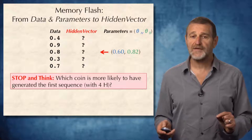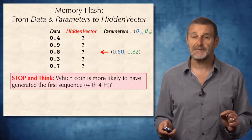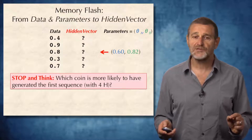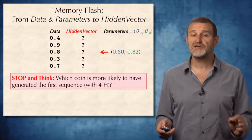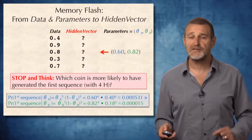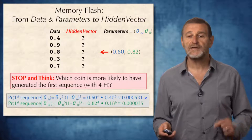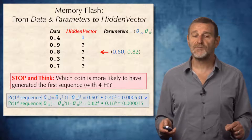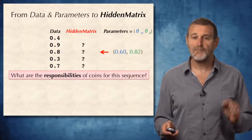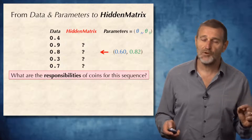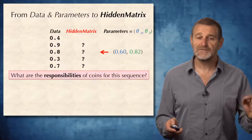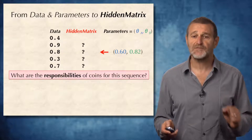Let's recall how we derive the hidden vector from the previous lecture. Let's assume the parameters are 0.60 for the blue coin and 0.82 for the green coin. Which coin is more likely to have generated the first sequence with these four flips? We simply computed the probability of the sequence being generated by the blue coin, the probability of it being generated by the green coin, compared them, and found that the blue coin is more likely — and that's how we constructed the hidden vector. But now let's try to be a little more accurate. Instead of deciding blue or green, let's compute the responsibility of the blue and green coin for the first sequence of flips.